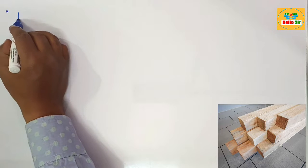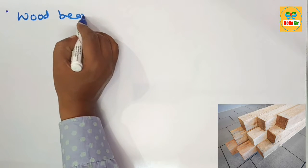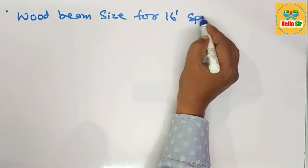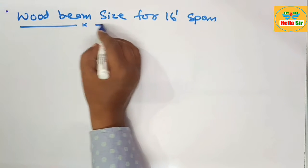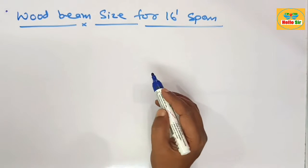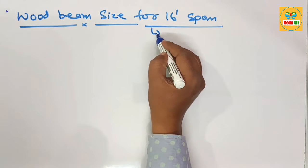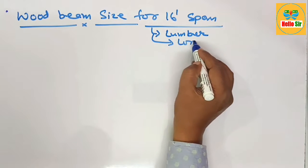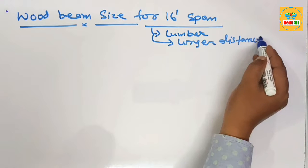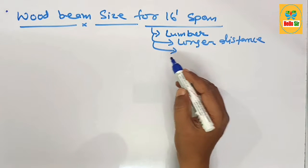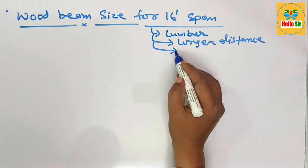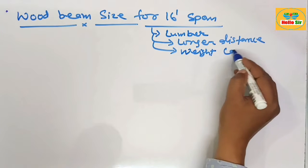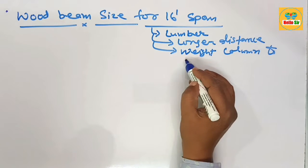In this video we learn about wood beam size for a 16-foot span. A wood beam is a composite piece of lumber required to span longer distances, and it can support live load, dead load, and seismic load, transferring the weight of a structure to the column and down to the foundation.